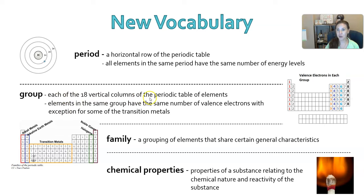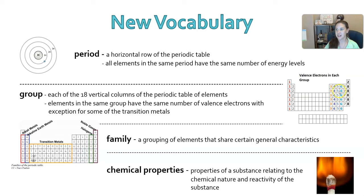Each of the eighteen vertical columns in the periodic table are called groups — we also use the word 'families' interchangeably. Elements in the same group have the same number of valence electrons, with the exception of the transition metals. For example, an element in the fifth column has five electrons on its outermost shell — five valence electrons — and if it's on the third row, it has three energy levels.